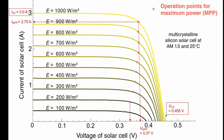Also for the second irradiance level, at 200 W/m², the voltage at the maximum power point is 0.338 volts. The short circuit current is 0.6 amperes, and the open circuit voltage for the illumination level of 200 W/m² is 0.414 volts.